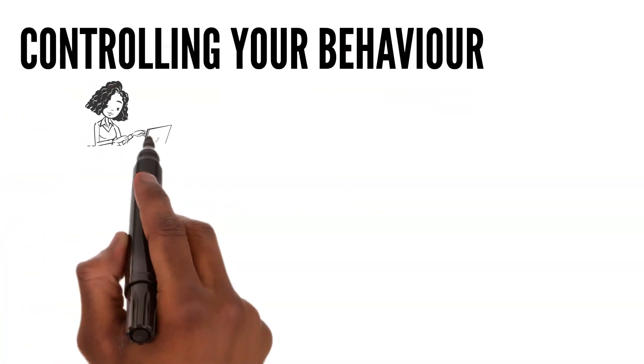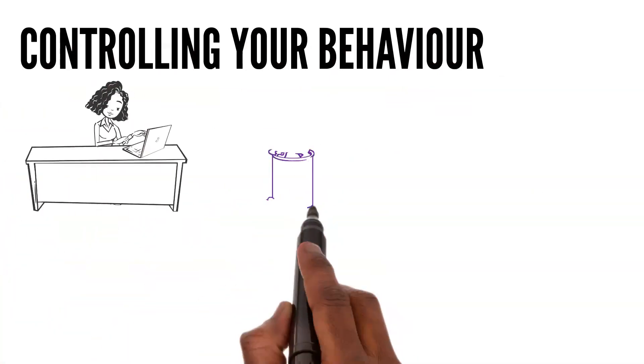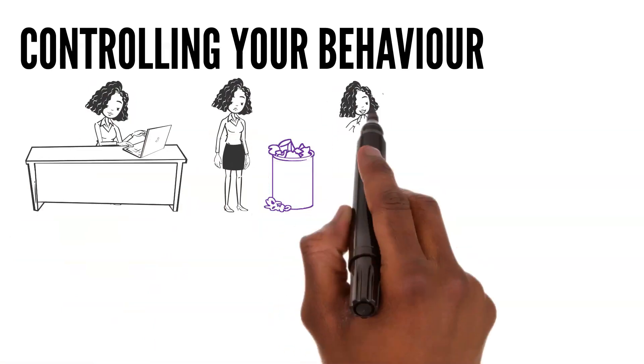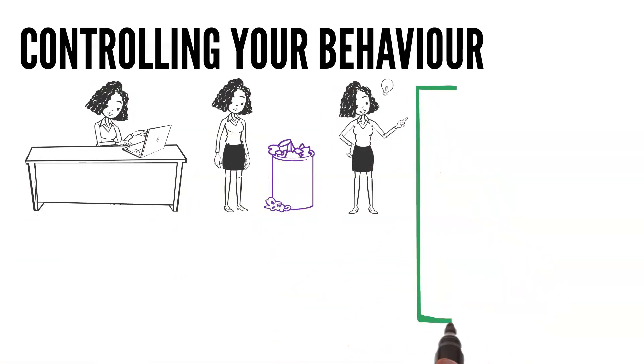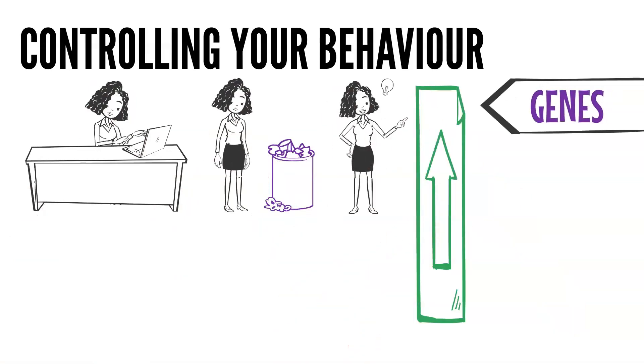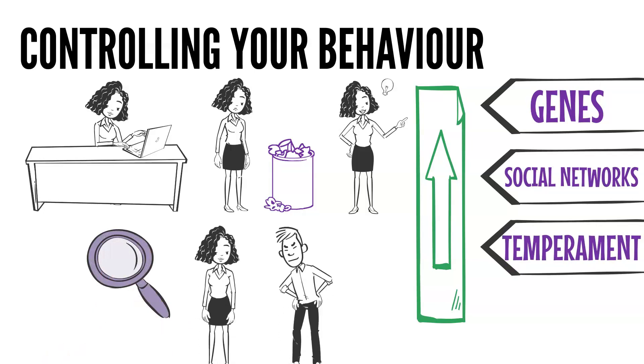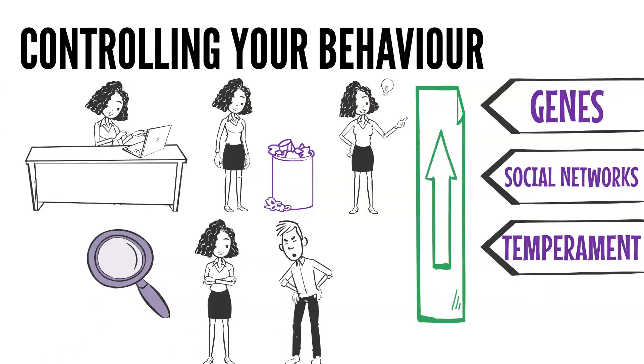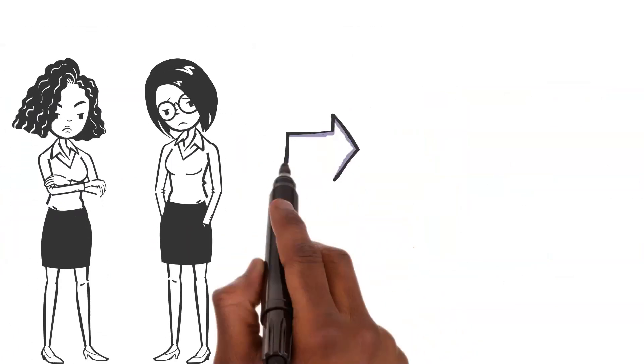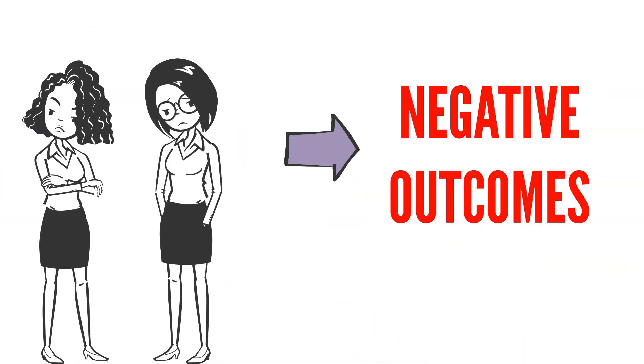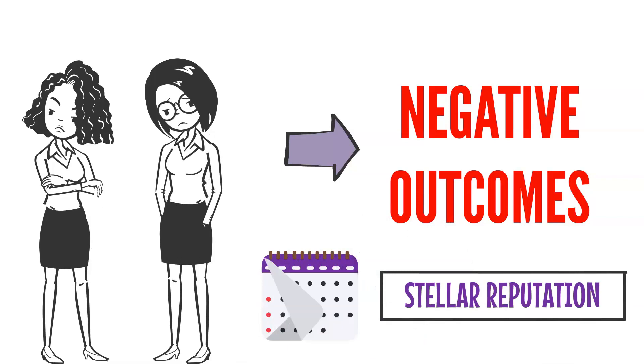Controlling your behavior: Whether it is getting up to speed at a new job, overcoming addictive behavior, or making everyday decisions, it is reliant on more than just genes, social networks, and temperament. It also depends on your ability to identify and attempt to overcome reacting impulsively. Impulsive behavior usually has negative outcomes that can instantly damage months, even years of your efforts to build a stellar reputation.